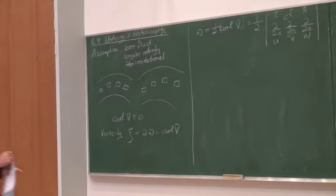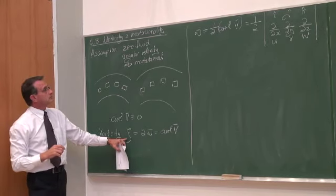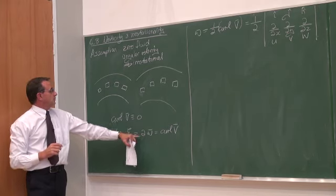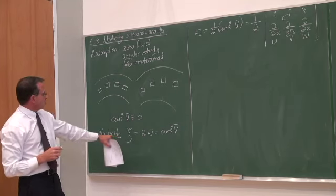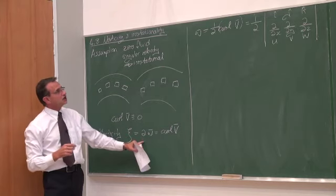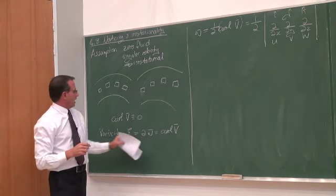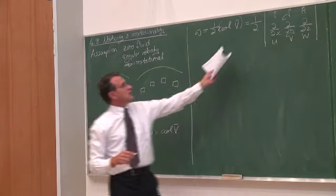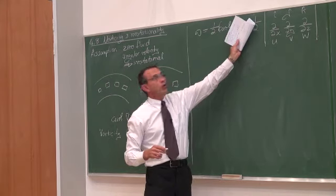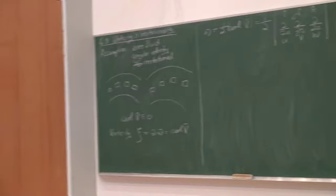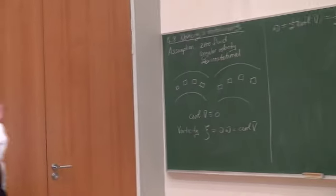The vorticity is two times the angular velocity. The reason we use the concept of vorticity is simply to get rid of the annoying factor of one half in the equation — that's the only reason.